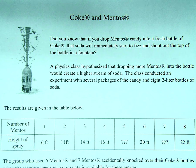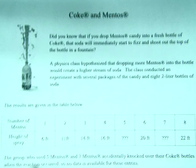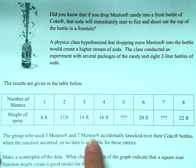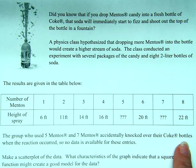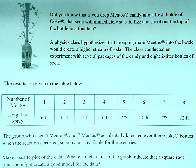What do you notice about the table? It's missing some numbers, right? Five and seven are there but there's no data for five and seven. Well that's because the group who used five and seven accidentally knocked over their Coke bottles when the reaction occurred, so no data is available for those entries.